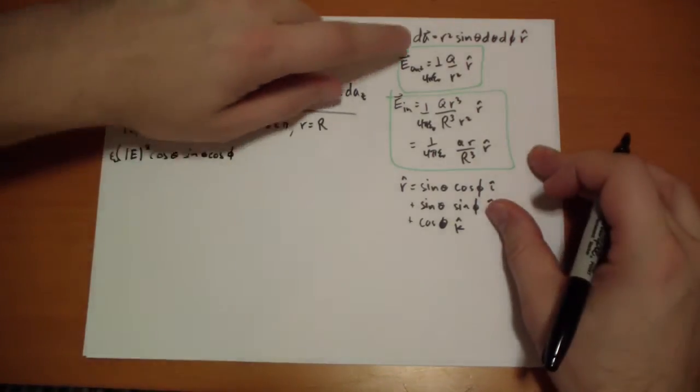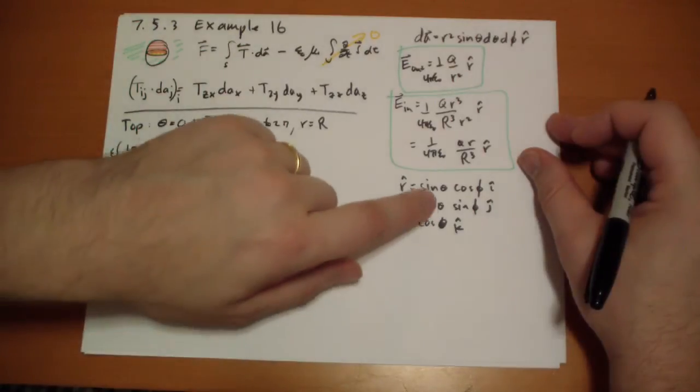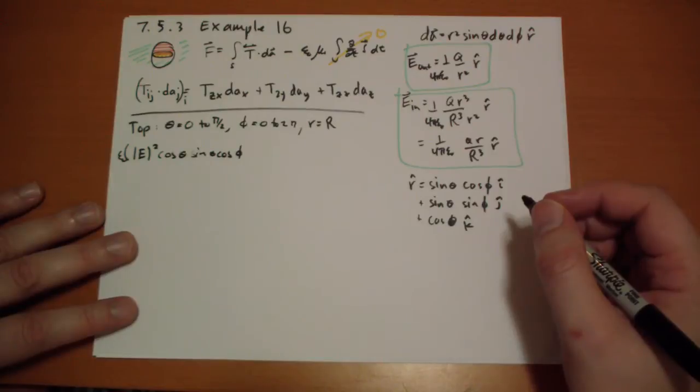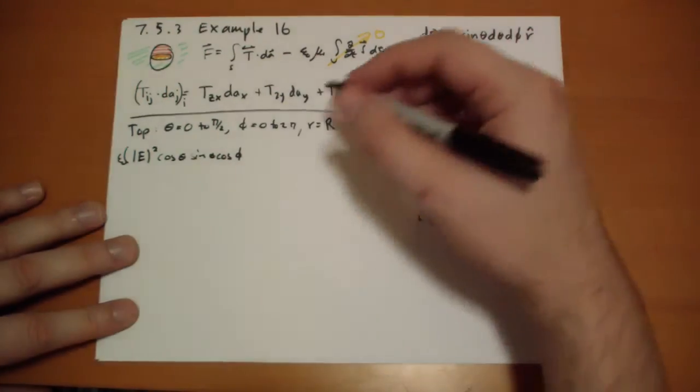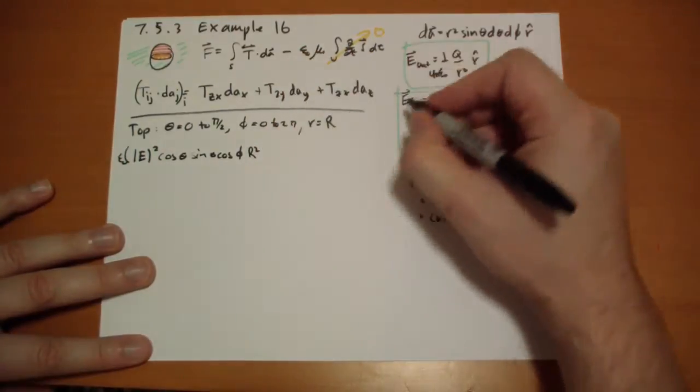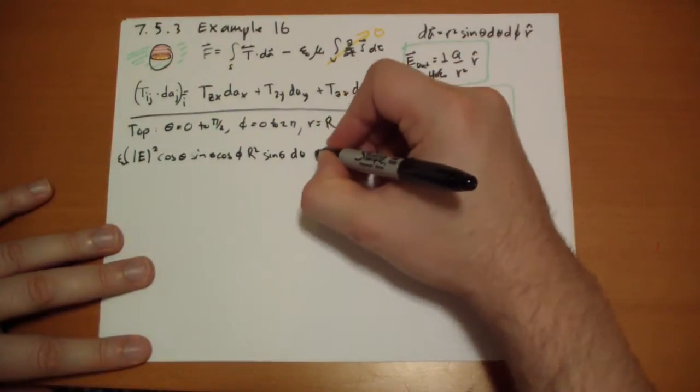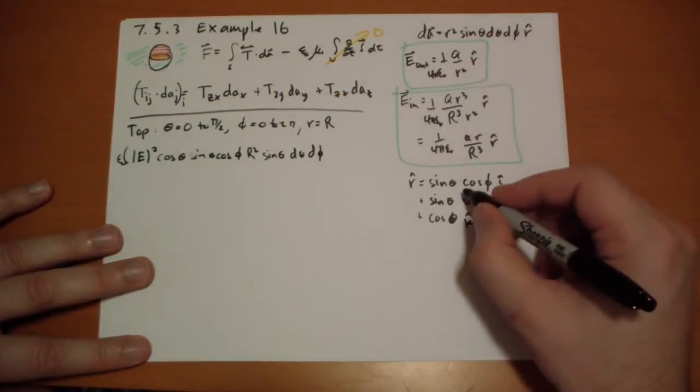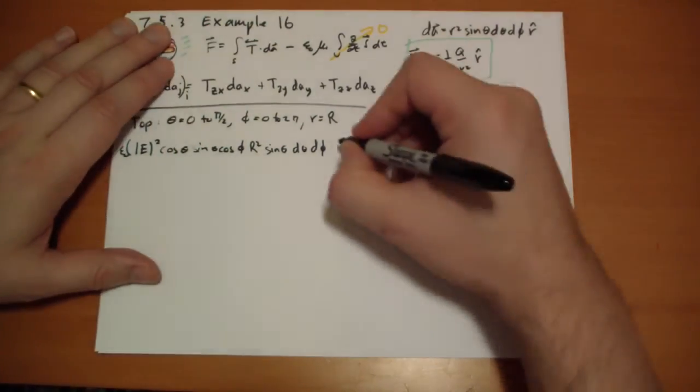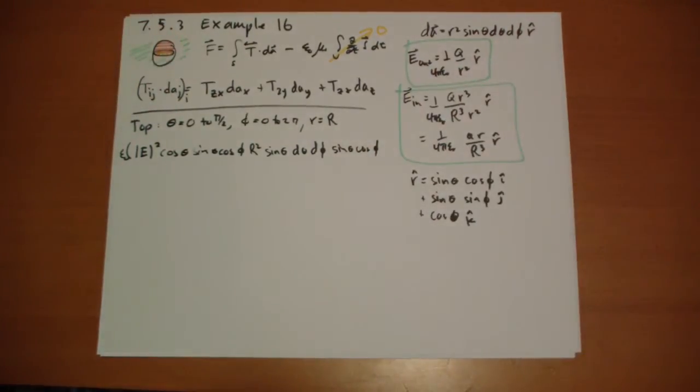dA_x. Well, dA in the x direction is this times that. So we get times R squared, sine theta, d theta, d phi, and the r hat direction. So that's... We're doing the x component. So sine theta, cosine phi. That's one of them.